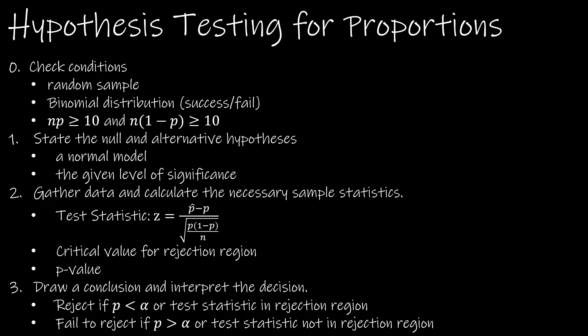Then we will state our null and alternative. Remember for proportions we're back to the normal model with whatever level of significance we're given in the question. And then we're back to finding a z-score, and the z-score is a little bit different than the z-score for means. Then we have the critical value and the p-value that we will need to find, and then we're drawing a conclusion in the same way.